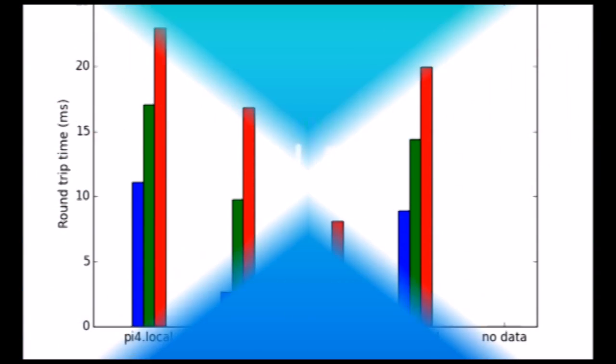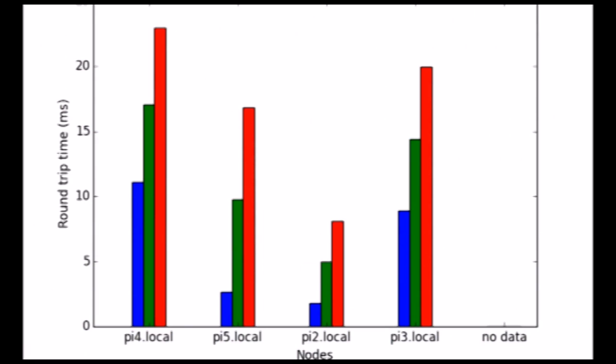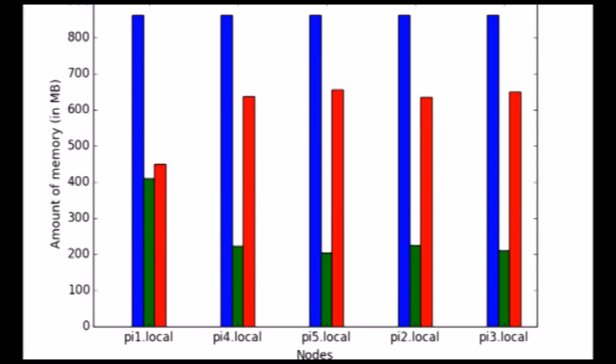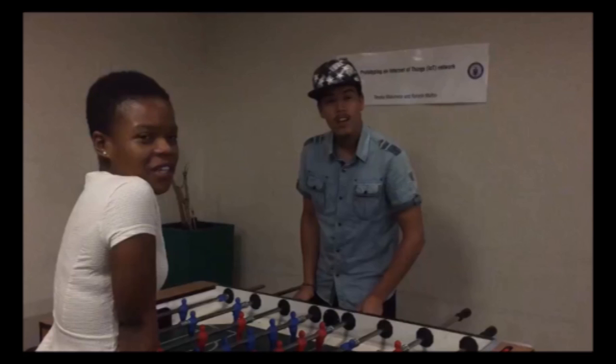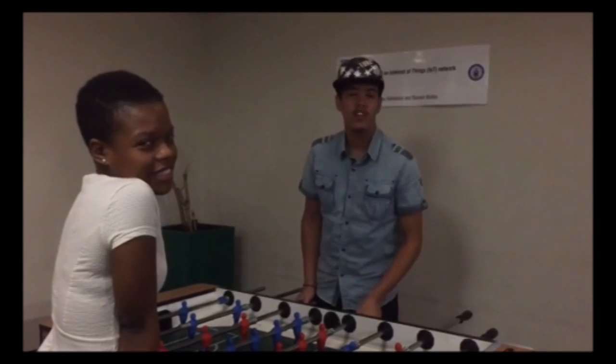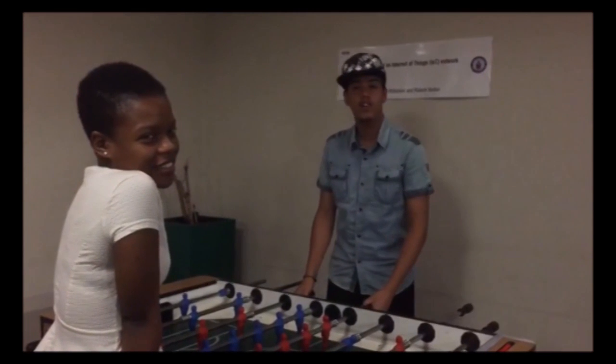Additional features of the system monitors include network latency, memory usage, and power consumption of each individual node. Our system has shown that it is able to perform its desired function by sending an image over a wireless sensor network. Thank you for watching.